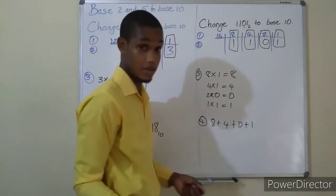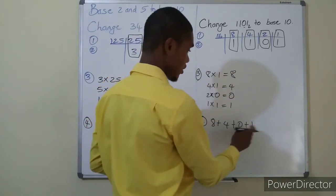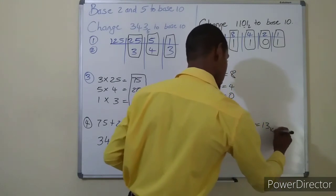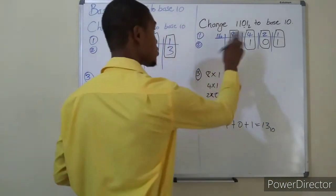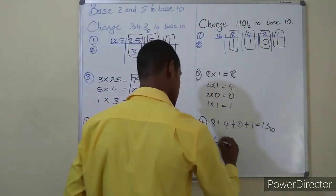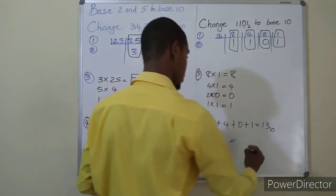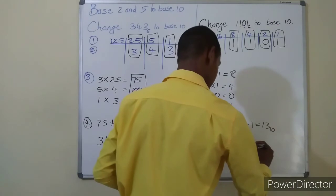So it's eight plus four plus zero plus one. Eight plus four is twelve, twelve plus zero is still twelve, and twelve plus one is thirteen. You put your ten at the bottom to show that it's base ten. So 1101 in base two is equivalent or equal to 13 in base ten.